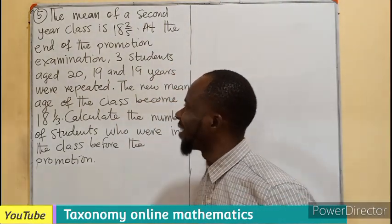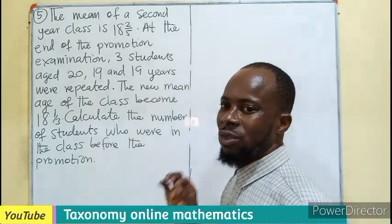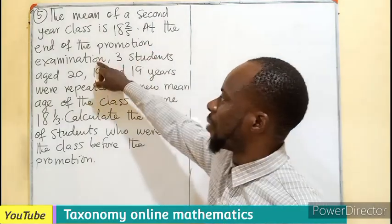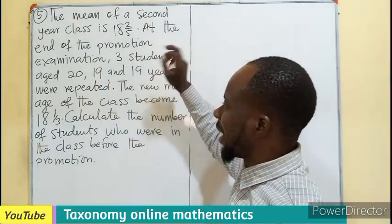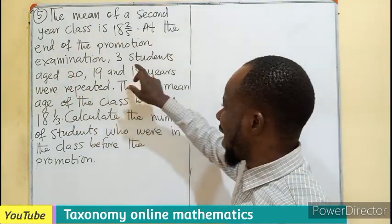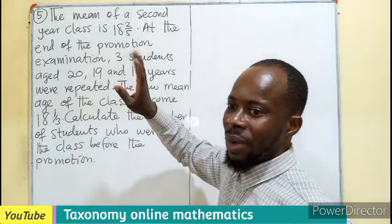The mean of a second year class is 18 and 2/5. At the end of the promotion examination, 3 students aged 20, 19 and 19 years were repeated.